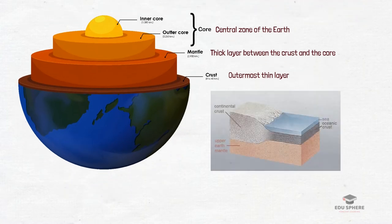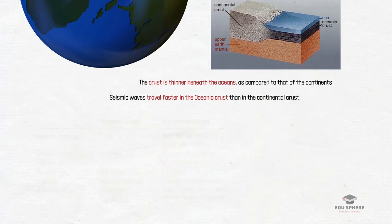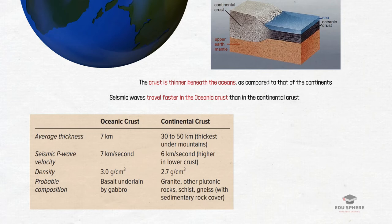Studies of the seismic waves have shown that the crust is thinner beneath the oceans as compared to that of the continents. Besides, the seismic waves travel faster in the crust below the oceans than in the continental crust. Because of this velocity difference, it is assumed that the oceanic and the continental crusts are made up of different kinds of rocks. Since the velocity of a seismic wave is related to the density of the material, it is considered that the oceanic crust is denser and heavier than continental crust.